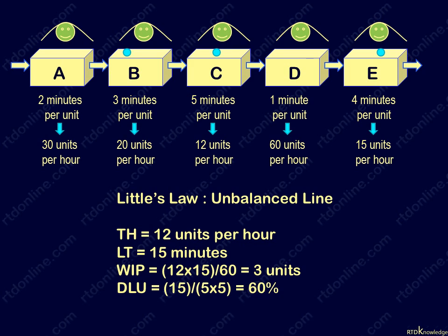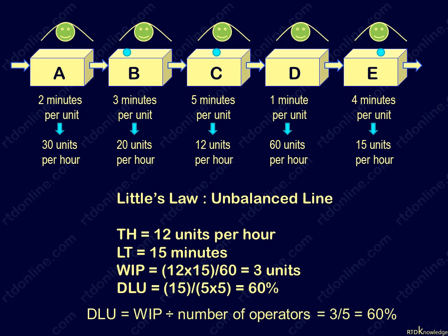Recall that the utilization of this process is 60%, derived by dividing the lead time by the product of the cycle time and number of operators. It can also yield the same result if we divide the work in process by the number of operators. Some may find it easier to understand direct labor utilization this way — 5 people working on just 3 units makes it 60%.